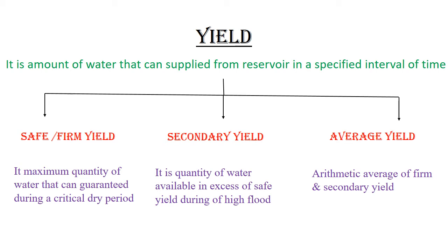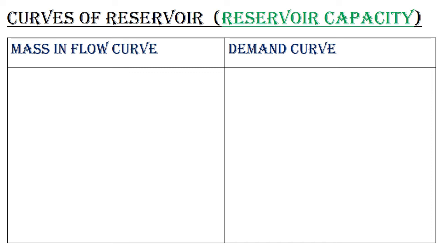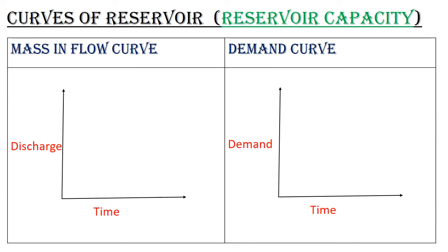Curves of Reservoir: Reservoir Capacity is determined using curves. We use Mass Inflow curves — Discharge vs Time. The question for Reservoir Capacity uses Masks Inflow and Demand vs Time. We could see one more way to identify Mass Inflow Curves using Mass Inflow and Demand.